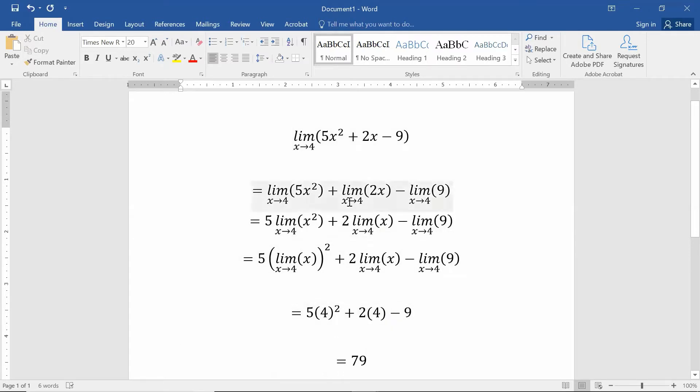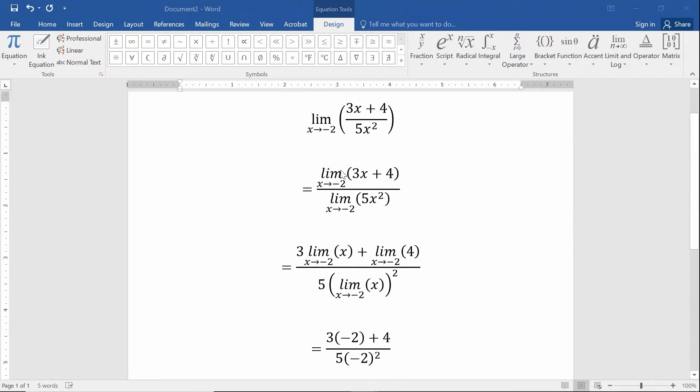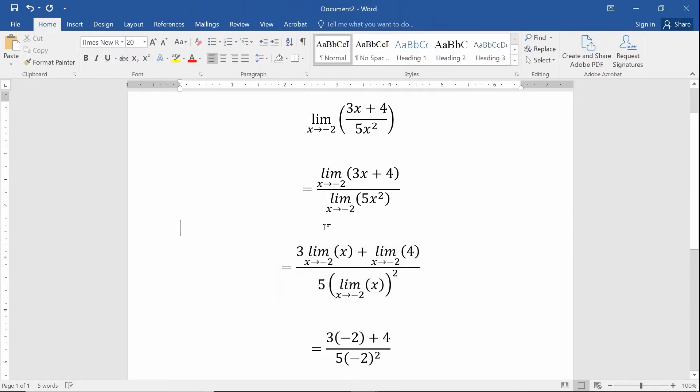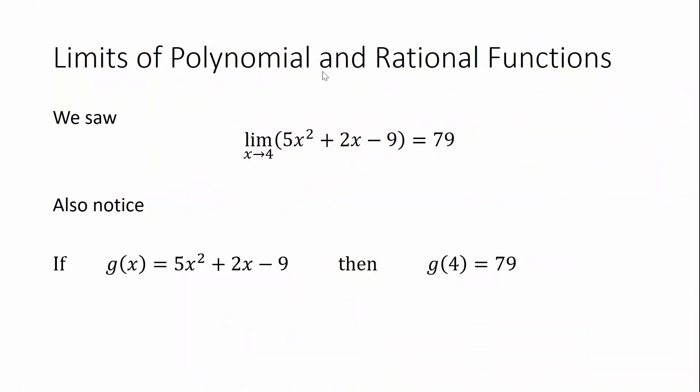Well, that also happened with the rational function we dealt with in the you do problem. We started out with this fraction 3x plus 4 over 5x squared. We took the limit of that as x goes to negative 2. And basically, we saw that through limit properties, we could have simply plugged in the negative 2 everywhere I see an x in order to get my answer. So in terms of the limits of these polynomial and rational functions, the two examples that I looked at worked out really nicely where I could have simply just plugged in a number into a function and got the same answer as taking the limit as x goes to that number.